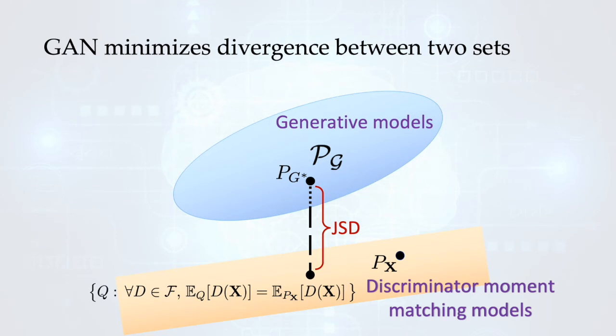In this work, we show that GAN in general minimizes divergence between two sets of probability distributions: generative models and discriminator moment matching models.